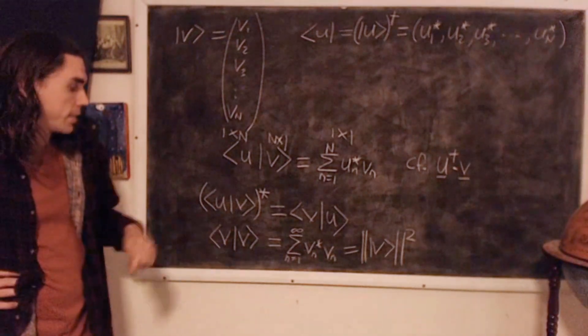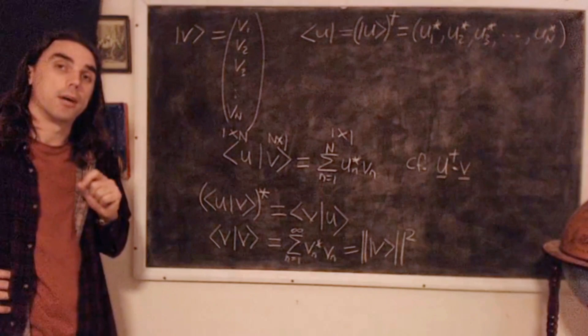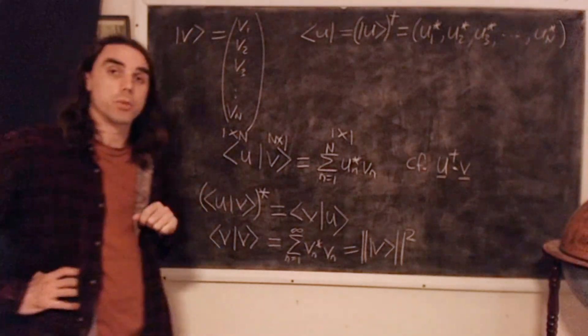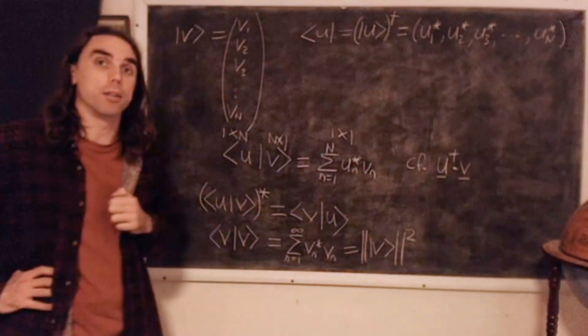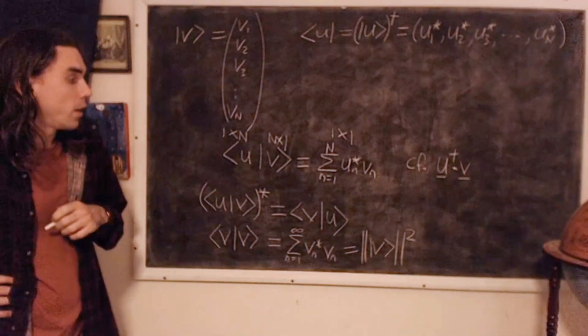So this makes sense, if we take v dot v for real vectors, we expect to get the length squared of v, the modulus squared. Okay,